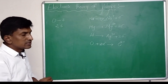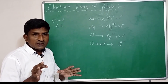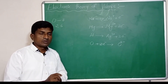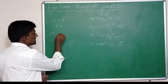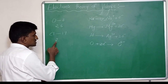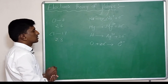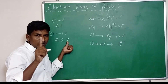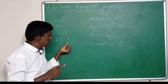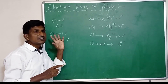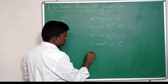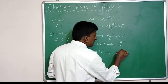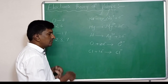Seventh group elements generally have 7 electrons in their outermost orbit, so gaining one electron makes them stable. For example, chlorine has atomic number 17, with 2 electrons in the first orbit, 8 in the second orbit, and 7 in the third orbit. To get stability, chlorine needs one more electron in its third orbit. It gains one electron, reaching 8 electrons in the outermost orbit, and becomes a uni-negative ion or anion, Cl⁻.